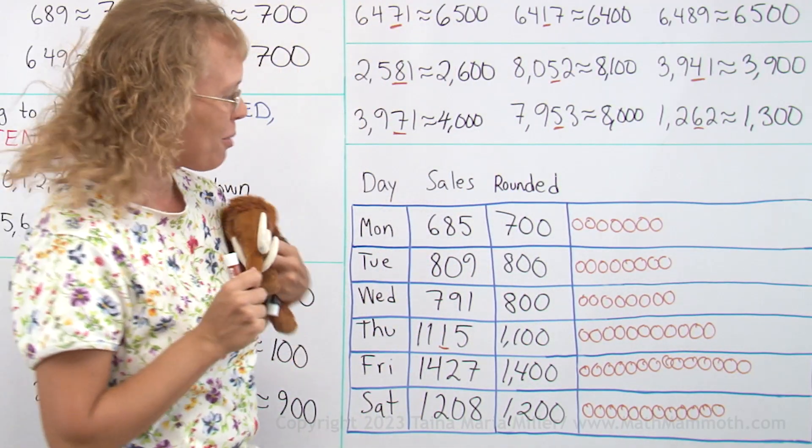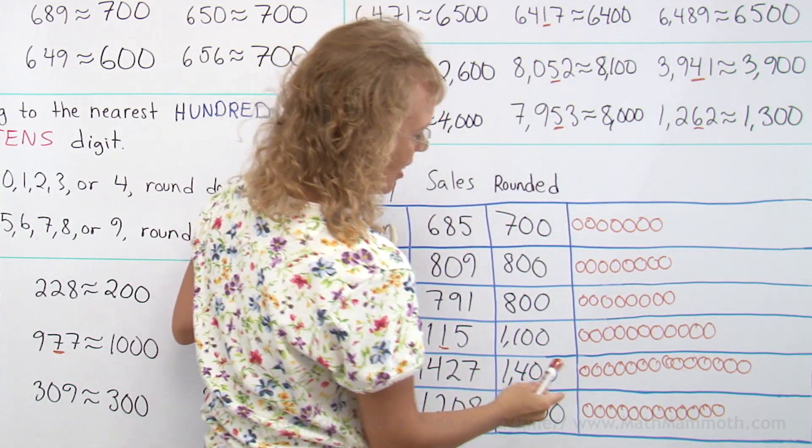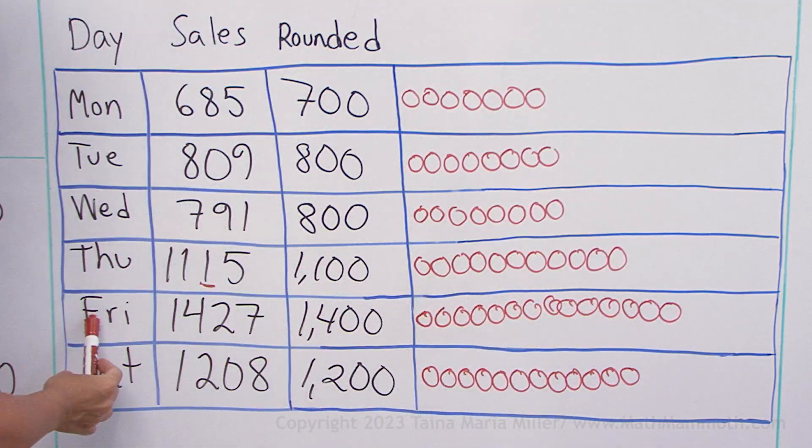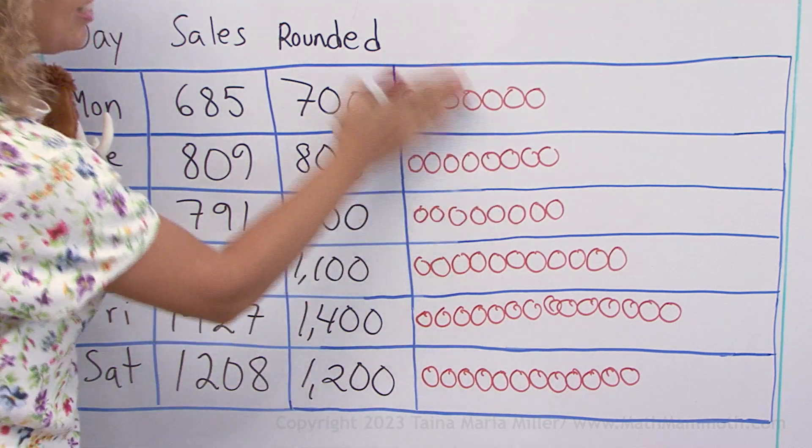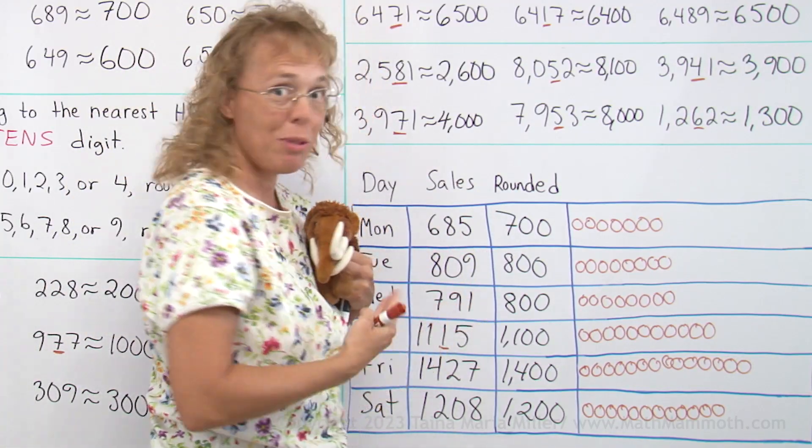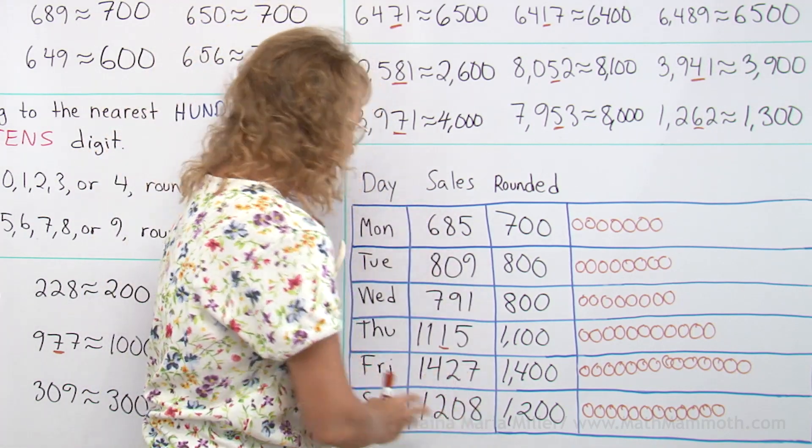All right. And now in the pictograph, we can kind of see how the sales went. Okay, the best day was Friday. Towards the weekend there were more sales than in the beginning of the week. The pictograph shows that quicker than just trying to look at all these numbers.